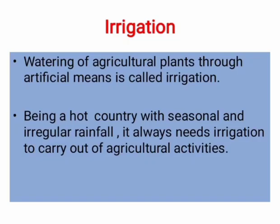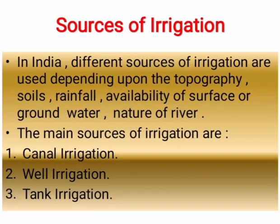Irrigation: watering of agricultural plants through artificial means is called irrigation. India is a hot country with seasonal and irregular rainfall, so it always needs irrigation to carry out agriculture. In India, different sources of irrigation are used depending upon the topography of soils, rainfall, availability of surface or groundwater and nature of river. The main sources of irrigation are canal irrigation, well irrigation and tank irrigation.